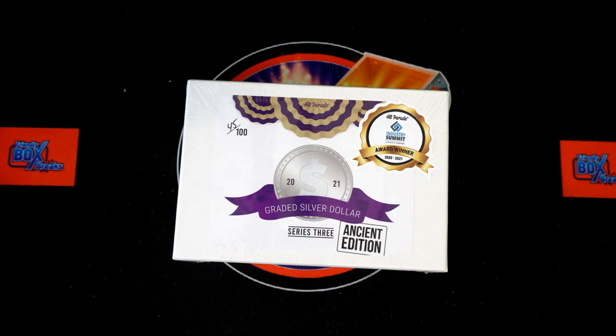And here we go, 2021 Hit Parade graded silver dollar ancient edition box 101. We've got our names, we've got our dates. We're going to random them each seven times, pair you up on the spreadsheet, and then we're going to dig in. All right, let's switch over and start our randoms.